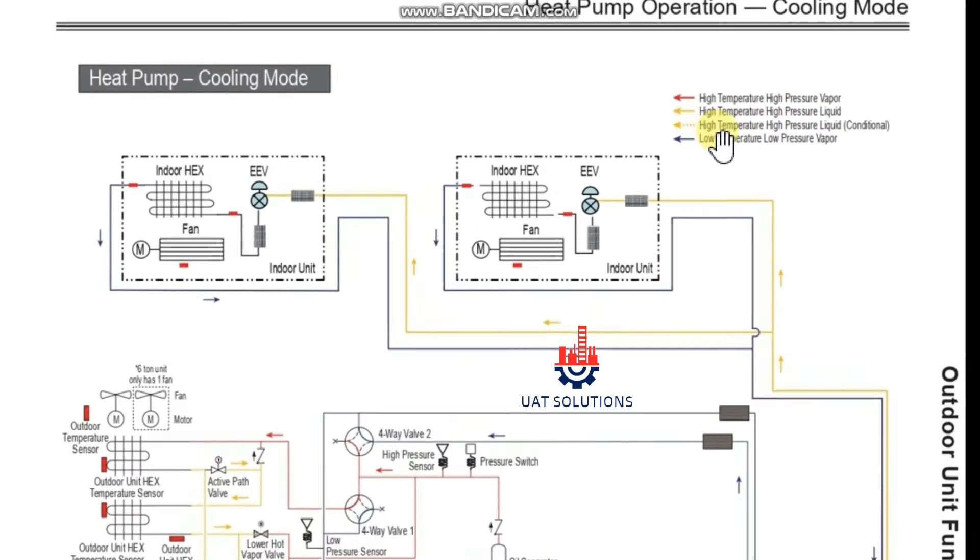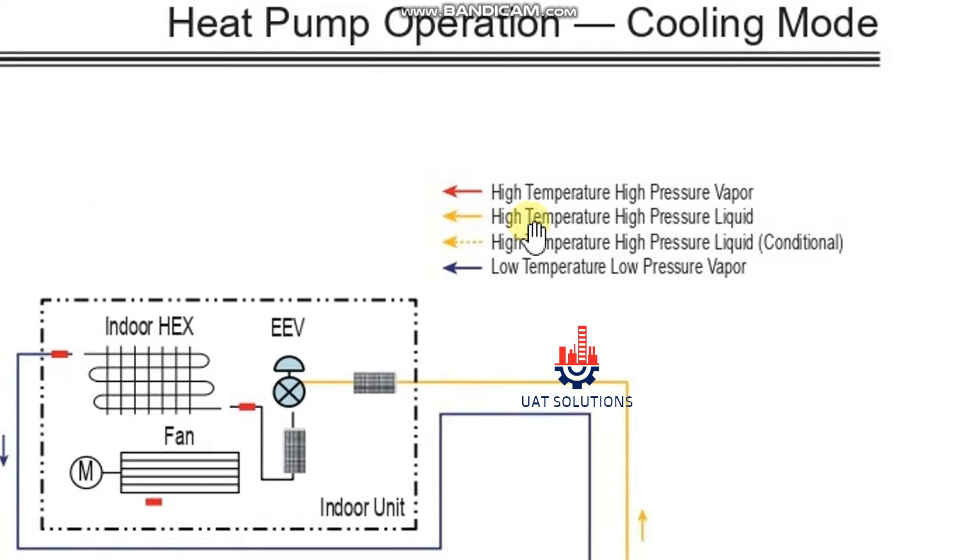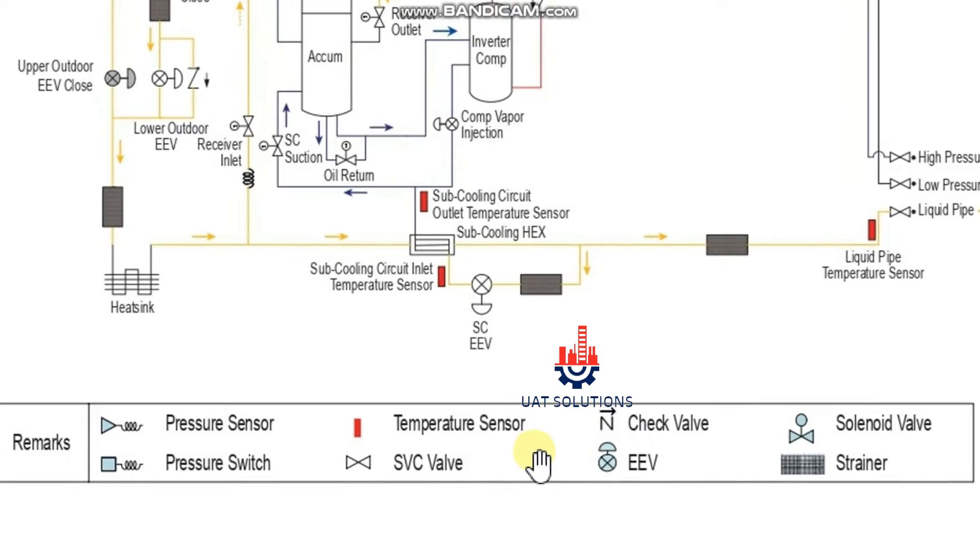Color coding used for the pipes are shown as red refers to high pressure pipe, yellow refers to high pressure liquid, blue color refers to low pressure vapor pipe. Please note the symbols used for the following parts to understand the cycle diagram.